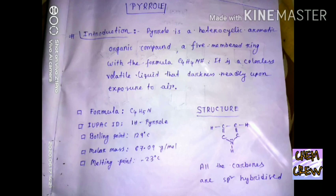The boiling point of pyrrole is 129 degrees Celsius, molar mass is 67.09 grams per mole, and the melting point is minus 23 degrees Celsius. The structure of pyrrole is planar as all the carbons of the ring are sp2 hybridized.